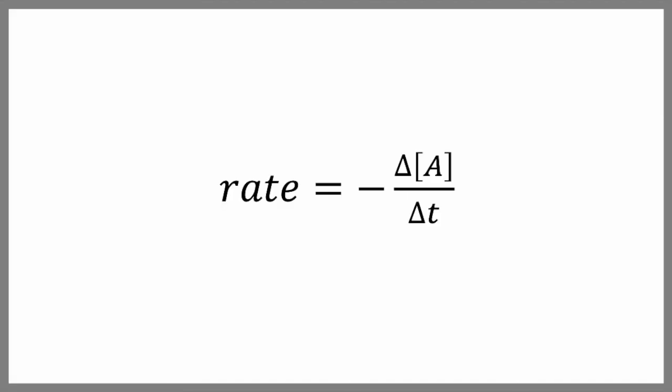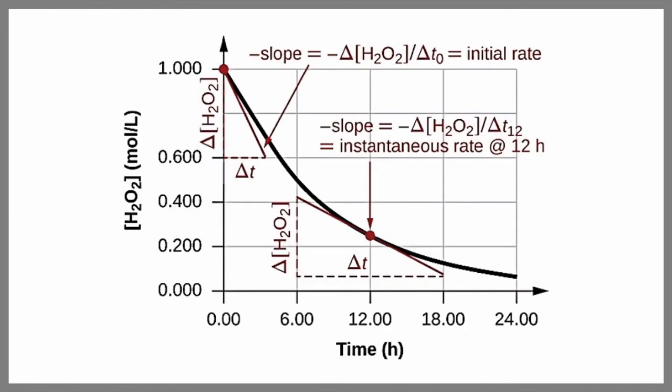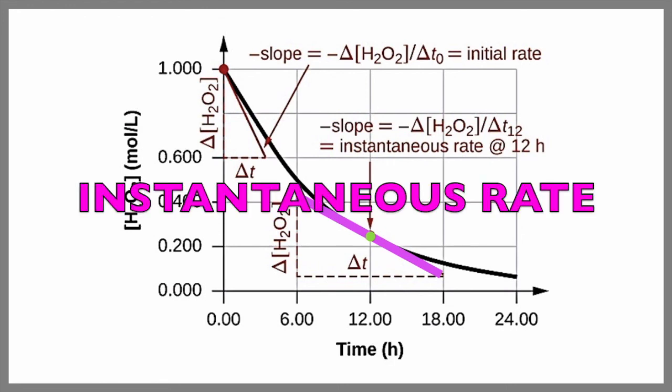Now, there are a couple of different kinds of rates we need to think about. The rate equation that we've been looking at gives us an average rate of reaction over a specified time interval. Now, if we wanted to find the exact rate of reaction at a particular time, then we would need to take the slope of the line tangent to the curve at that point. We call this the instantaneous rate of reaction.